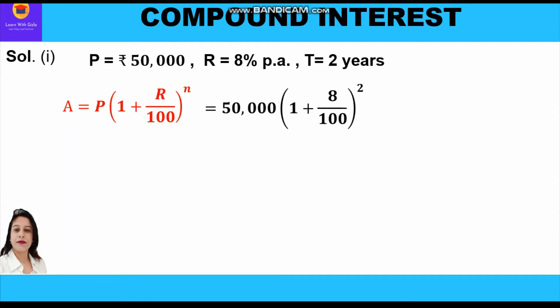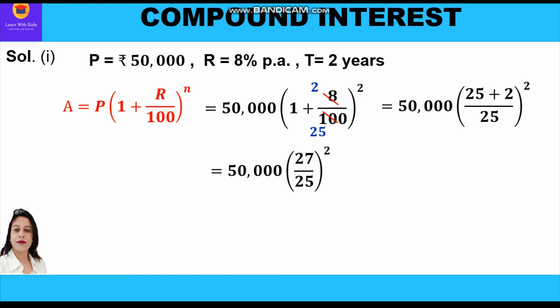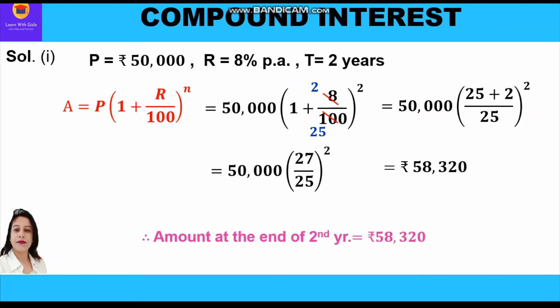Substituting values: A = 50,000 × (1 + 8/100)². Simplifying 8/100 by dividing by 4 gives 2/25. Taking LCM: 50,000 × (25 + 2)/25)² = 50,000 × (27/25)². This equals rupees 58,320. So the amount at the end of the second year is rupees 58,320.